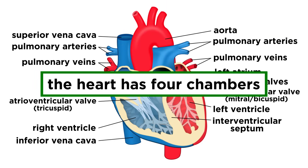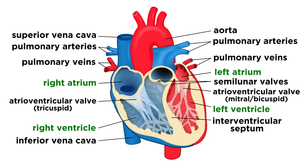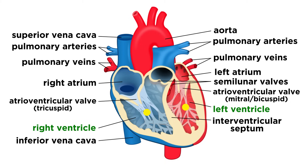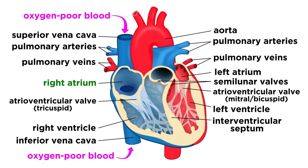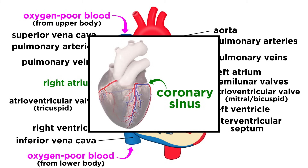Speaking of chambers, the heart has four of them. These are the two atria and the two ventricles we talked about. The atria are separated by the interatrial septum, and the ventricles are separated by the interventricular septum. The atria are the receiving chambers where blood arrives, which is then pushed down into the ventricles. Oxygen-poor blood enters the right atrium through three different veins. The superior vena cava delivers blood from upper parts of the body, the inferior vena cava delivers blood from lower parts of the body, and the coronary sinus collects blood draining from the myocardium.